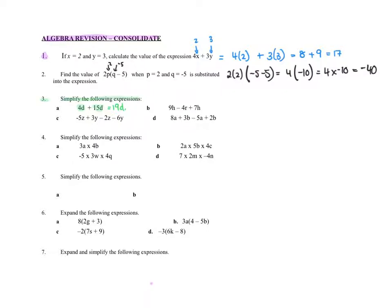In this second one, in b, only the h's are like terms. So I can do this part, which would be 9h plus 7h, but the minus 4r still needs to remain there. So if I do 9h plus 7h, that is 16h, but I've still got the 4r there. And that is my expression simplified.